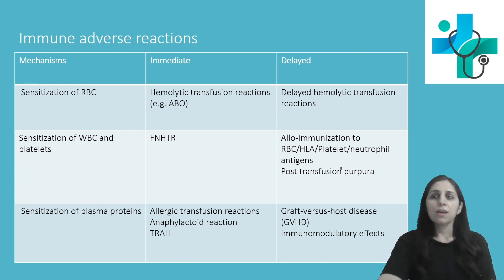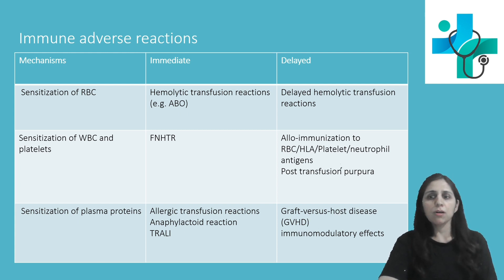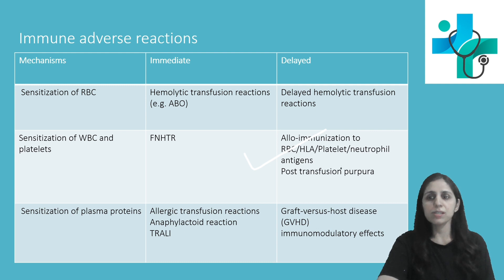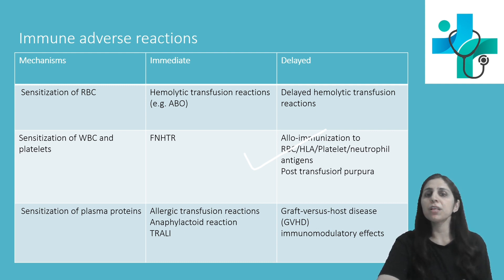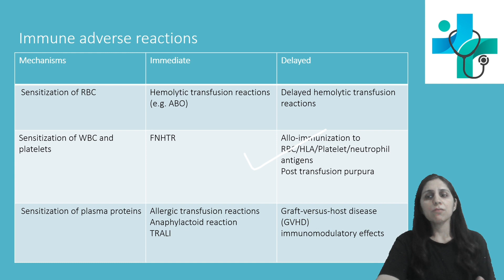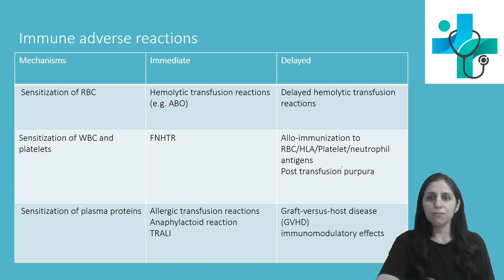The second common finding is alloimmunization of RBC, HLA, platelet, or neutrophilic antigens, which is usually seen after 48 hours.